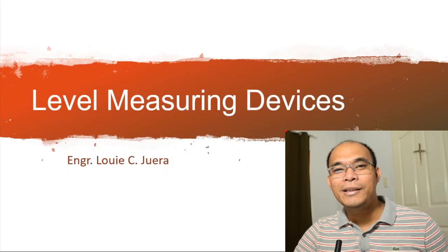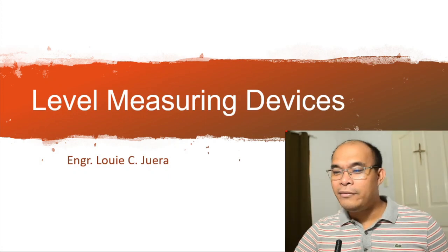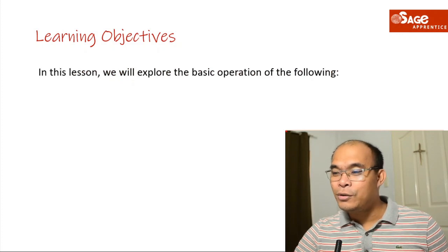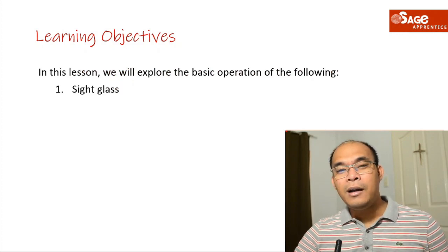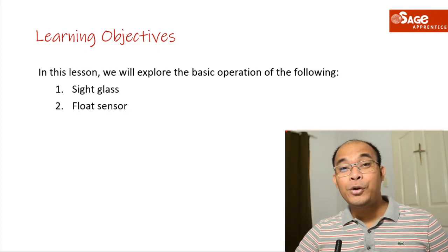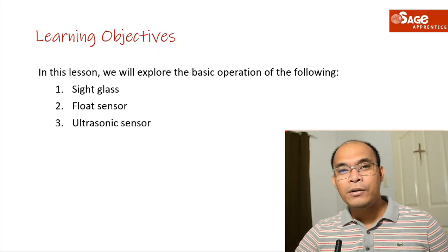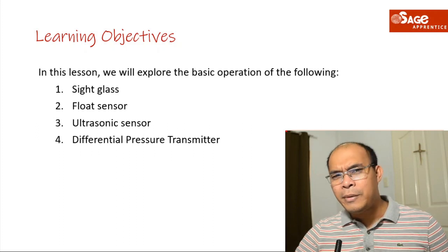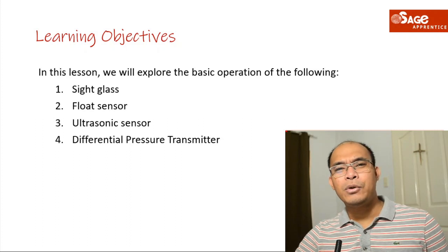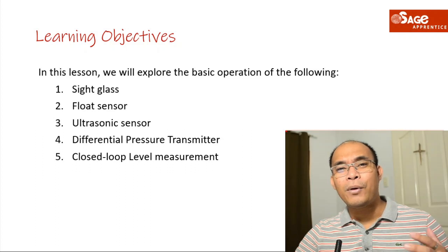Good morning and welcome to this lecture series. Today we will discuss level measuring devices. We will explore the basic operation of the following: how level is measured using a sight glass, float sensor, ultrasonic sensor, and differential pressure (DP) transmitter.